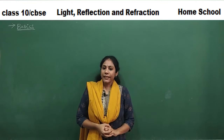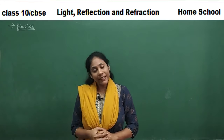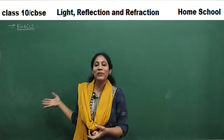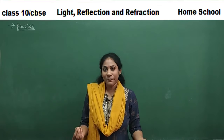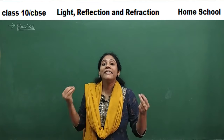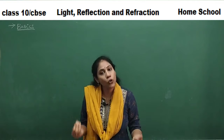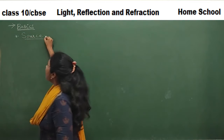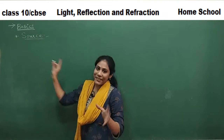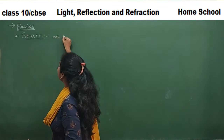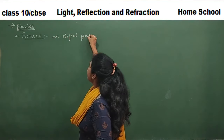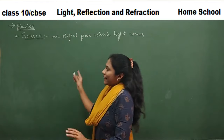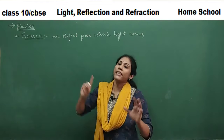Light is a form of energy, and where does it come from? It is coming from some object. Light will always come from some object, and that object we call a source. So the very first term is about a light source — a source is an object from which light comes. There are two types of sources: luminous and non-luminous.